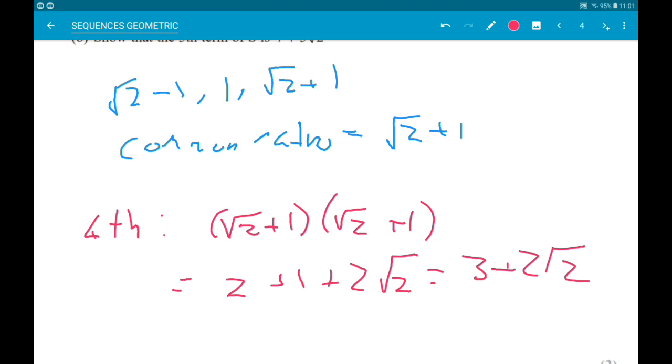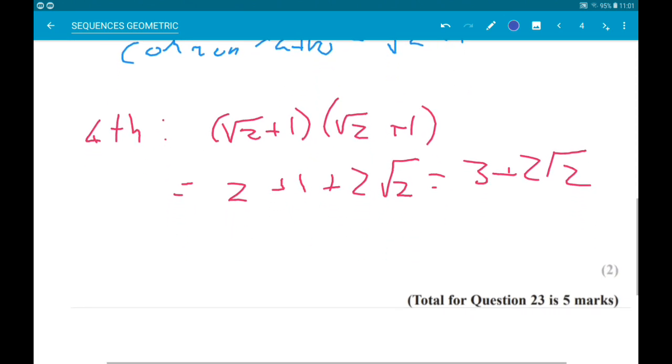So, that's the fourth. To get the fifth, we're going to do 3 plus 2 root 2, times root 2 add 1.